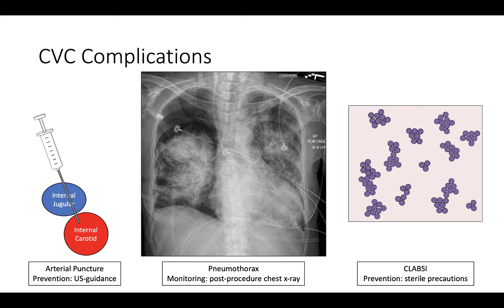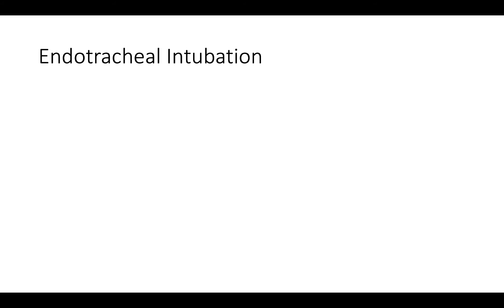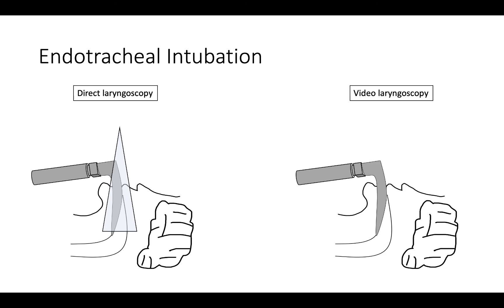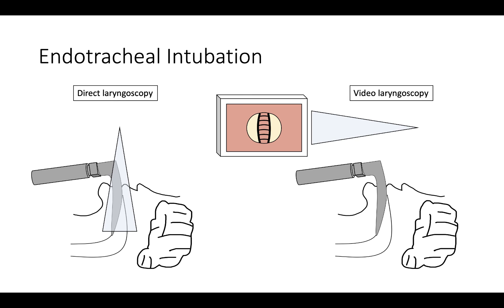We will end this session by discussing endotracheal intubation, which is performed when patients require invasive mechanical ventilation. The endotracheal tube becomes the connection between the patient and the ventilator. It is placed via direct or video laryngoscopy — in direct laryngoscopy the operator directly visualizes the vocal cords, while in video laryngoscopy a camera on the blade allows the operator to view the airway on a monitor placed next to the bed.